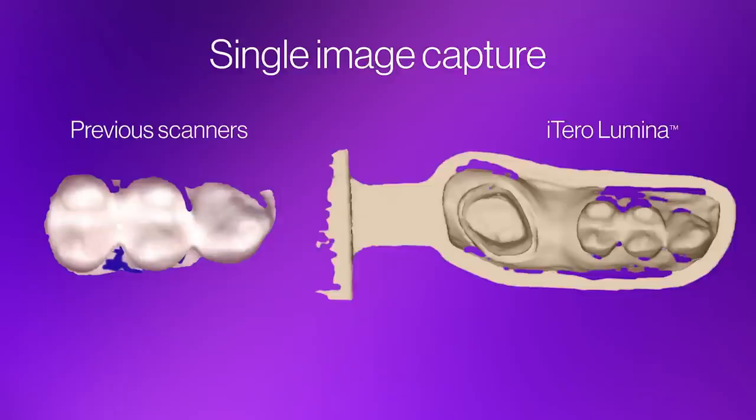Here is a visual demonstration of what this means. Here you can see what a typical scanner captures during a short, single movement, and next to it, what Lumina captures. With Lumina, you can get an image of the same three teeth, plus the edentulous space, the last molar, and basically the entire model, all in the same movement.